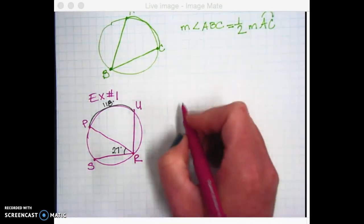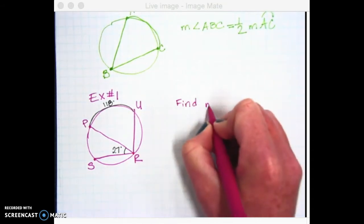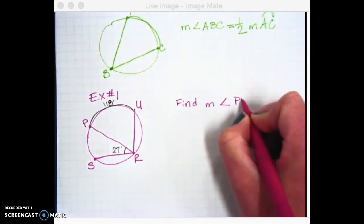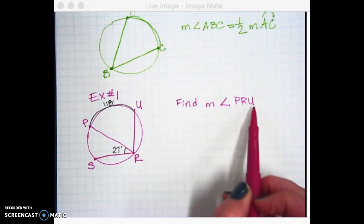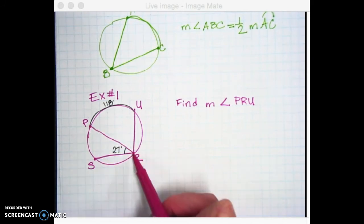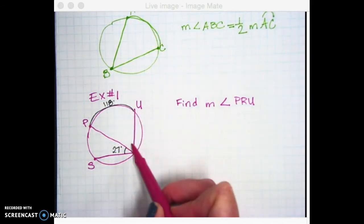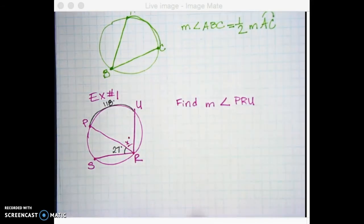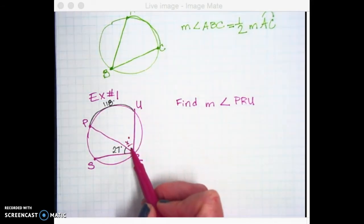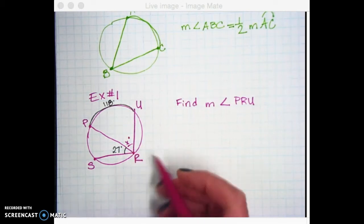And so for example number 1, we're going to find the measure of angle PRU. If it was a central angle and the arc, it would be the same measure, but now that it's inscribed, it's either going to be half or double. So we have to figure out which way we're going. So we're going to look for angle PRU. Take your finger or take your pencil and tap it out. Here's P, here's R, here's U. So we want this little angle right in here. So we're going from the arc to the angle. Should we double it or half it? Take half of it.